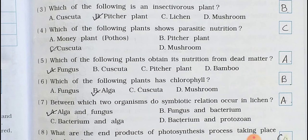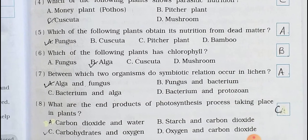Number 5. Which of the following plants obtains its nutrition from dead matter? A. Fungus. B. Cascuta. C. Pitcher plant. D. Bamboo. Answer is Option A: Fungus.